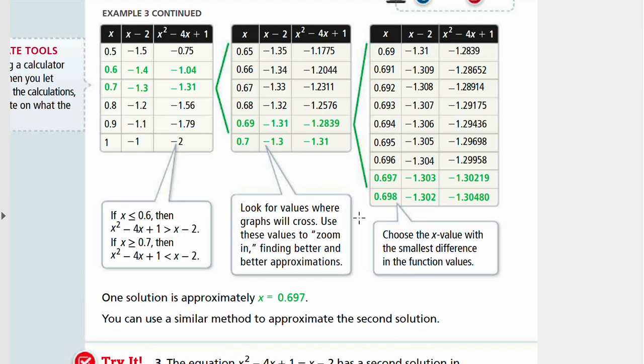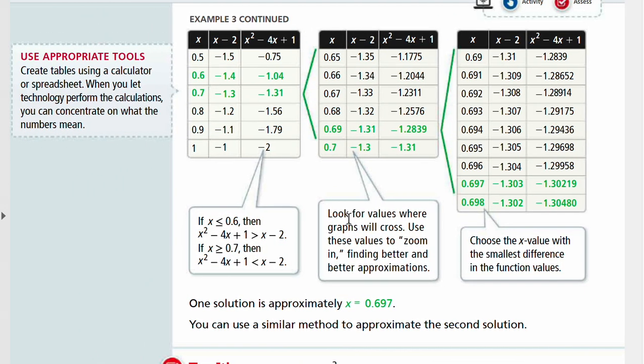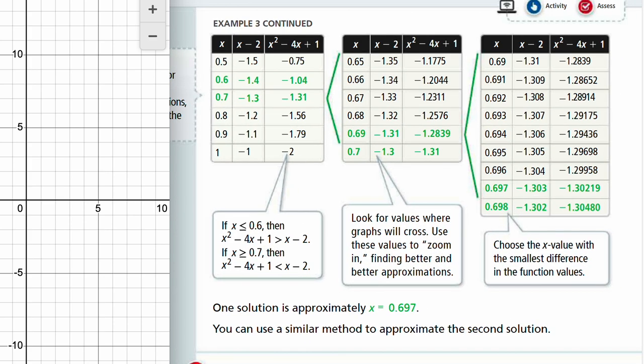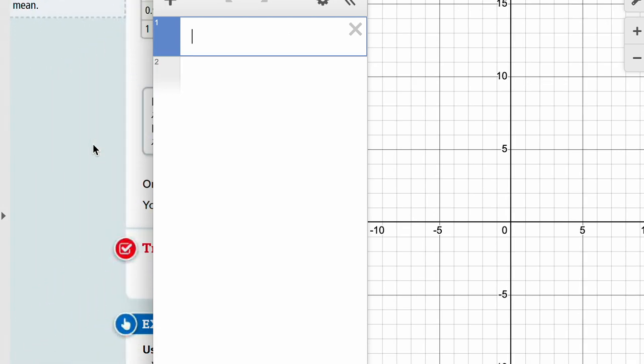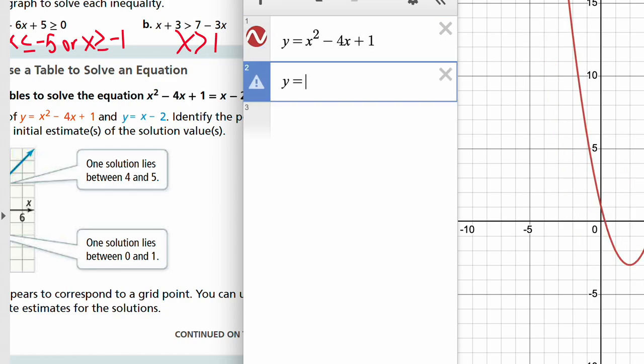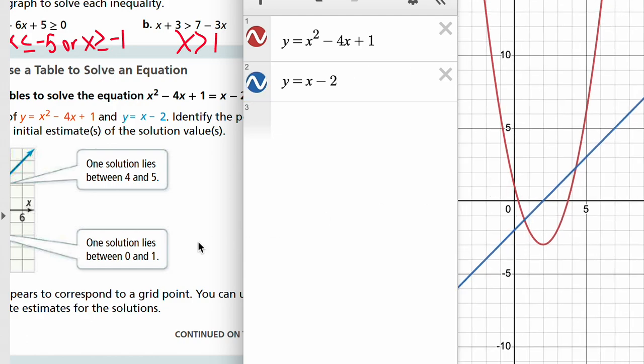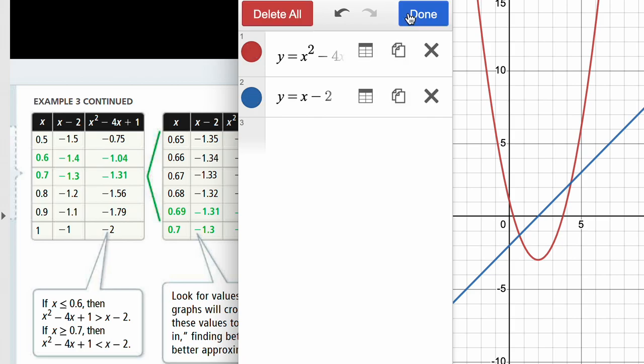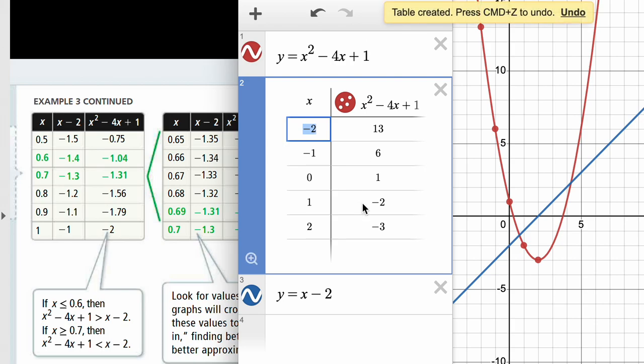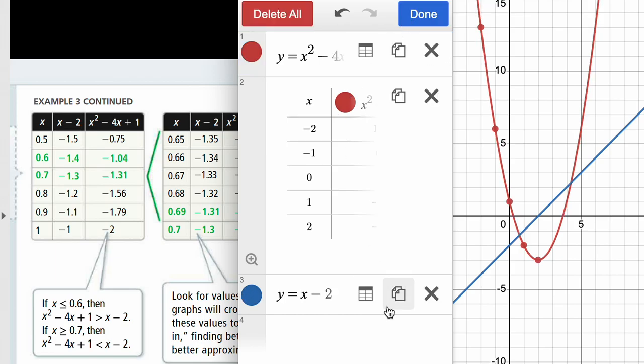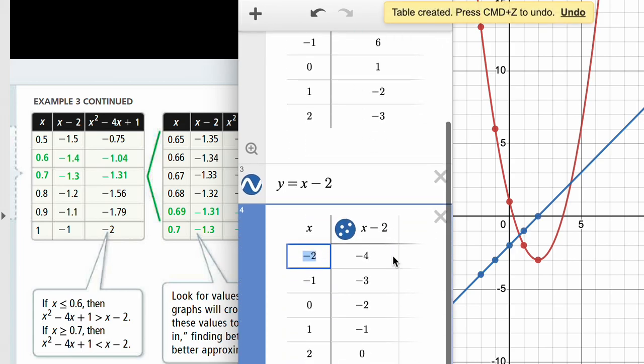So if you have a graphing calculator, you can use the table function. If you're using the online graphing calculator, you would just type in the functions. We are going to type in our functions: y equals x squared minus 4x plus 1, and then y equals x minus 2. So we have the same graph here. And then, in order to get table from Desmos, you have to go to settings, edit list. And then you'll click create table for each function. After you create the table for the first one, you will have to click the settings again to create the second table.